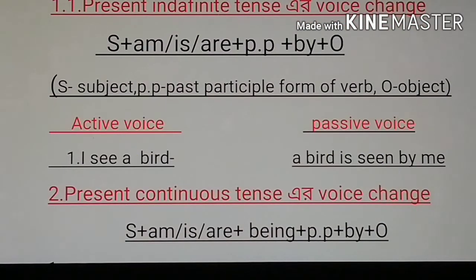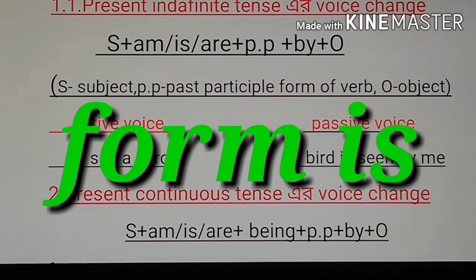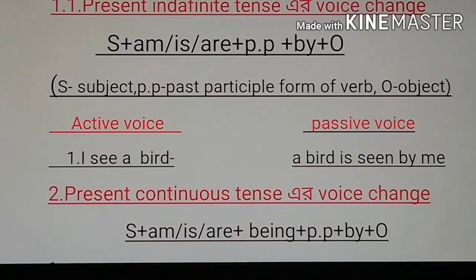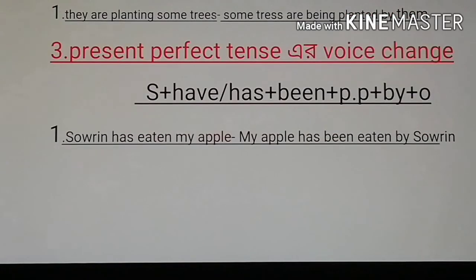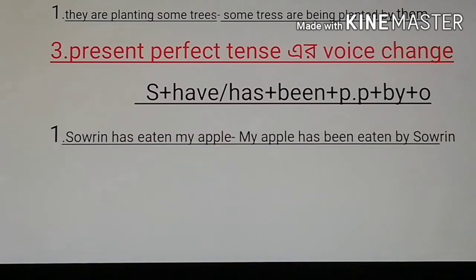Next is the present continuous tense voice change. The formula is: subject + am/is/are + being + past participle (PP) + by + object. Look at its example: 'They are planting some trees.' The passive voice form is: 'Some trees are being planted by them.'